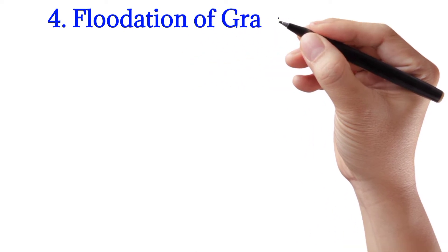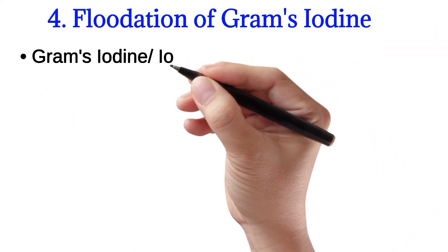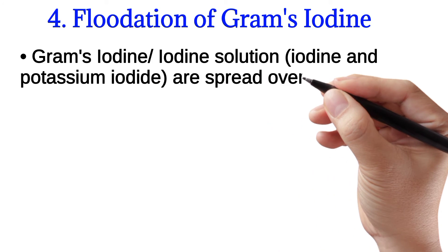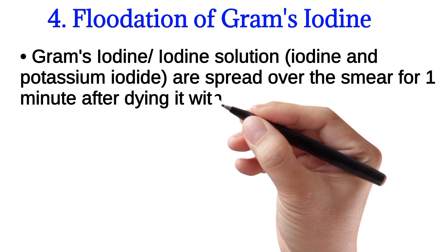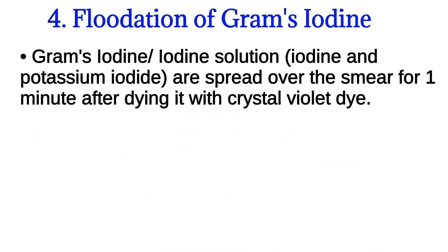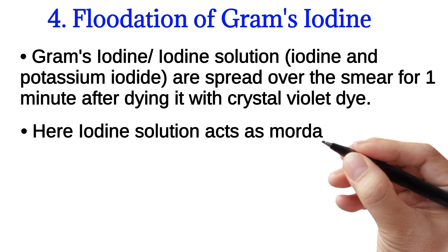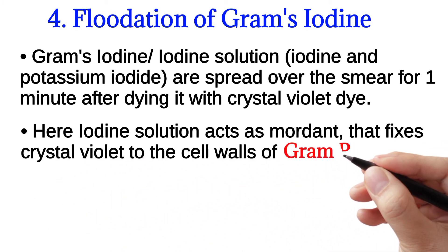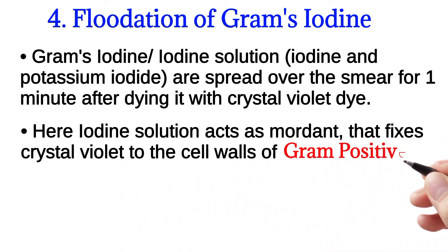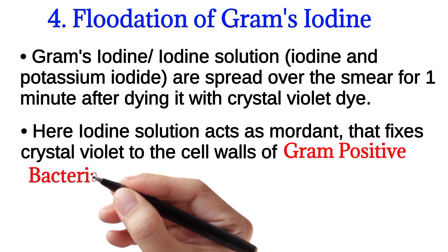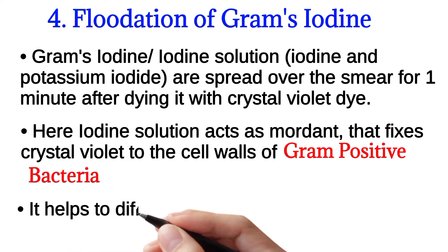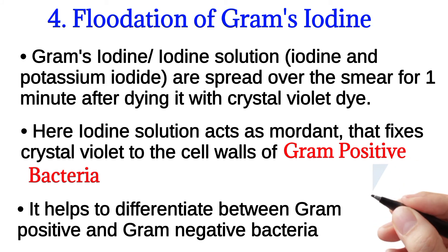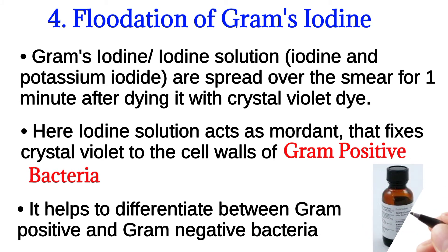Application of Gram's iodine. Gram's iodine solution is spread over the smear for one minute after dyeing it with crystal violet. Here, iodine solution acts as a mordant that fixes crystal violet to the cell walls of the Gram positive bacteria. It helps to differentiate between Gram positive and Gram negative bacteria. Here is the solution of Gram's iodine.